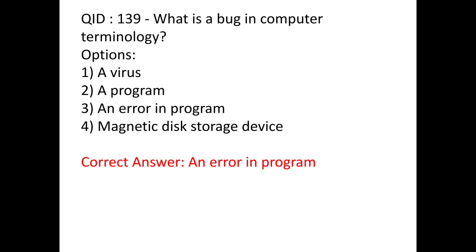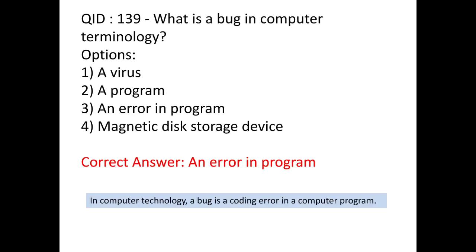What is a bug in computer terminology? A bug is an error in a program — it is not a virus. When an error occurs in a program it is called a bug. This is a very common term used in computer language. So bug means an error in the program.